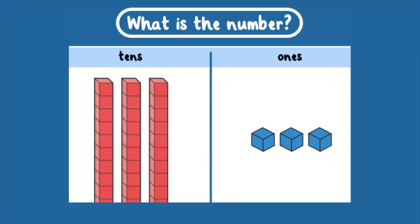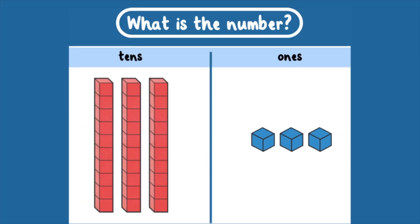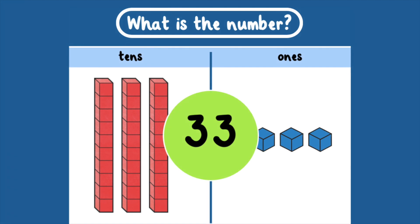What is the number? There are 3 tens and 3 ones. That equals 33.